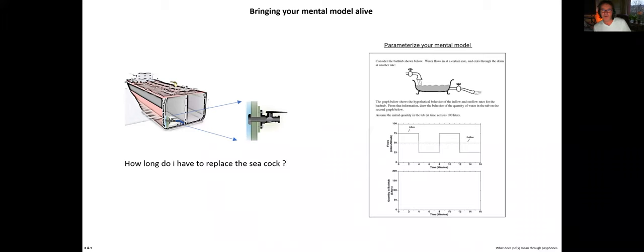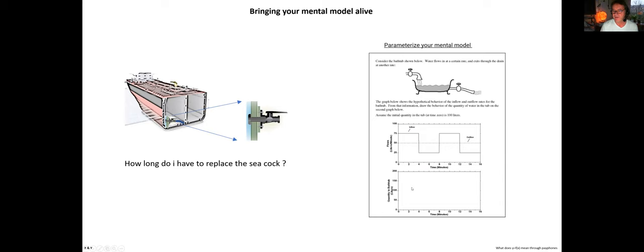Sterman's bathtub problem is simple: water flows out at a constant 50 litres per minute. The inflow is a step function — 75 litres per minute reducing to 25. He asks MBA students to draw a graph of how the water height changes over time. It's a three-parameter model, and they weren't able to get the answer just by thinking about it — yet these same people are making far more complex business decisions daily using only their mental models.